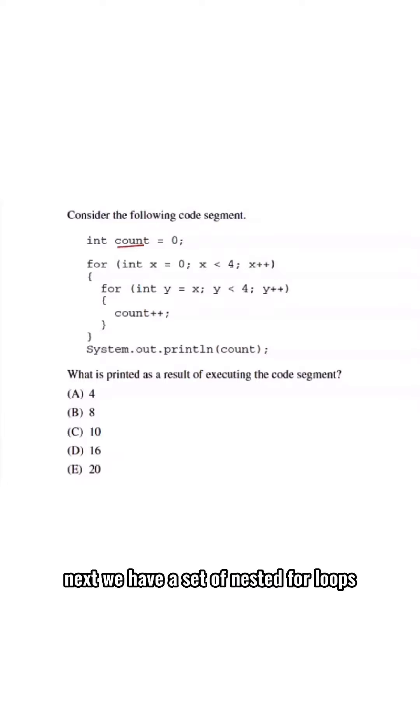Next, we have a set of nested for loops. In these for loops, x initializes as 0 and loops until 4. In the inner loop, y is initialized as x and y loops up until 4.